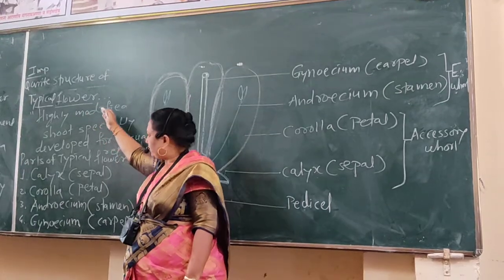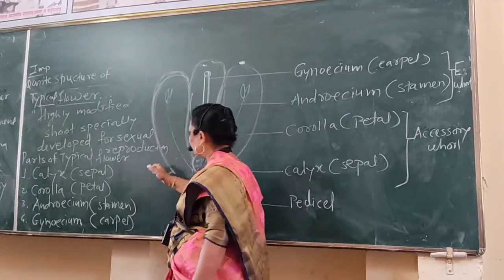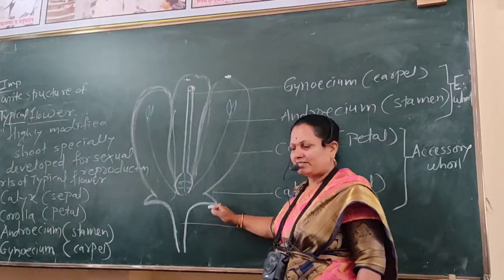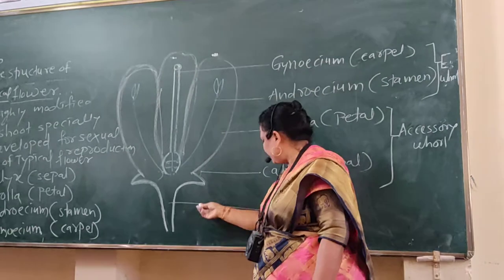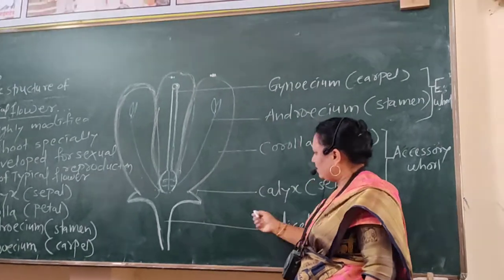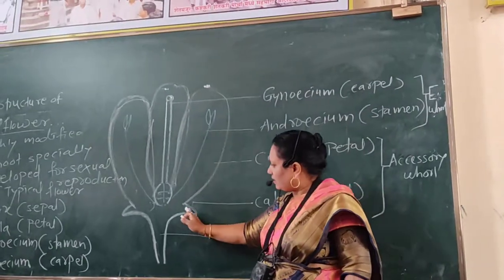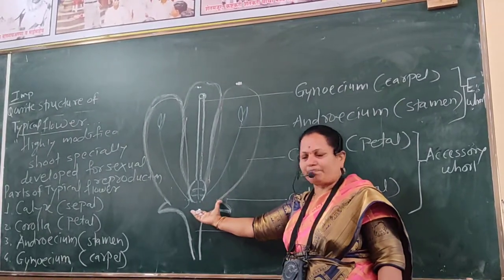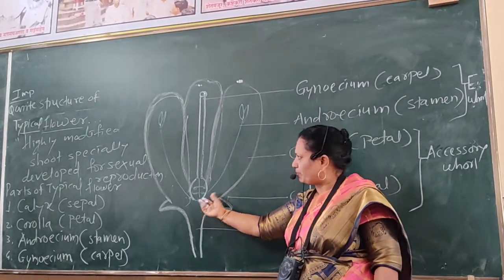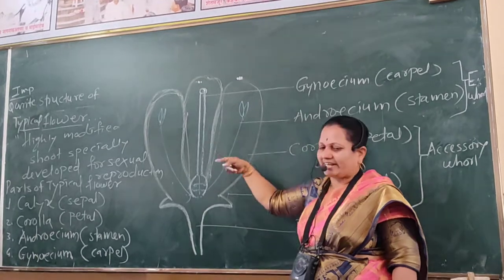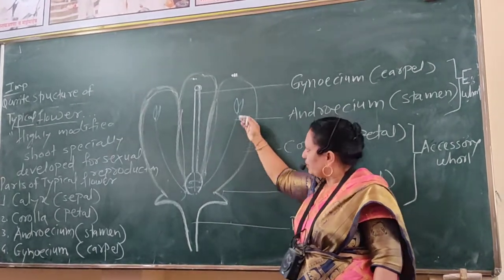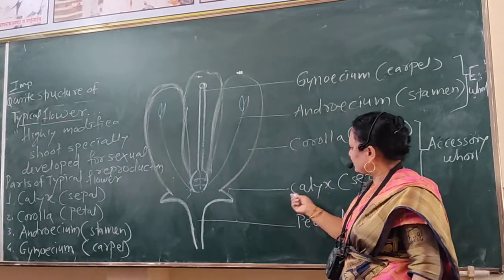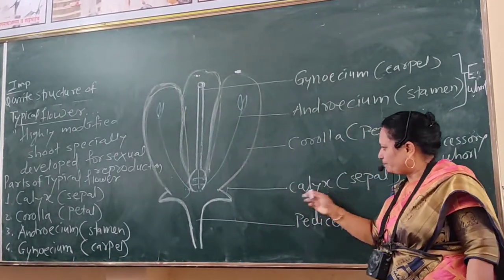A typical flower consists of the following parts. The first is the pedicel. On the pedicel, the thalamus is the basal part on which the floral whorls are arranged. The first floral whorl is the calyx.